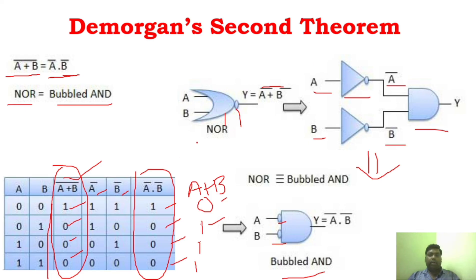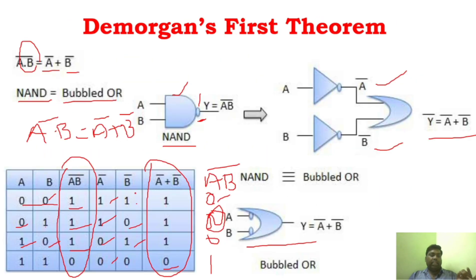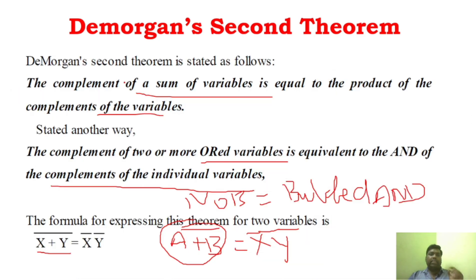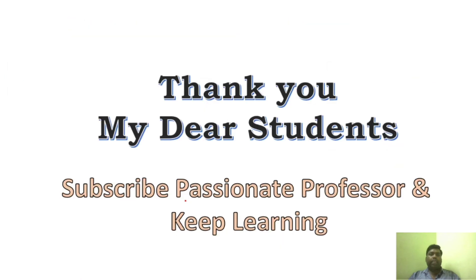So this is De Morgan's second theorem. Today what we have seen is De Morgan's theorem, which is a very simple theorem. We have seen two theorems. The first theorem says that NAND is equal to bubbled OR — the complement of a product is equal to the OR function of the individual complements. And similarly the second theorem says the opposite: the complement of a sum is equal to the product of individual complements — NOR is equal to bubbled AND. This is very important and you can easily answer this question. Thank you students.